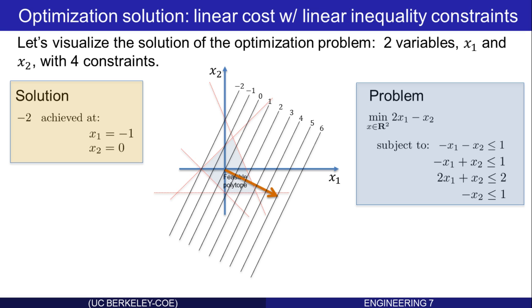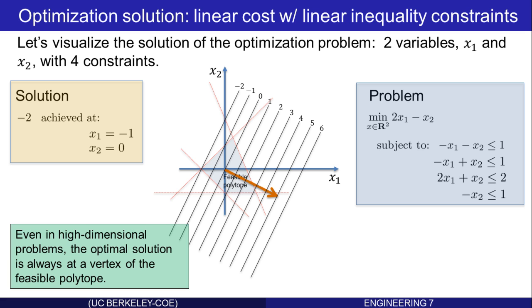It's clear from this visualization that in all these problems, an optimal solution will occur at one of the vertices of the feasible polytope. Well, that's true even in high-dimensional problems. An optimal solution is always at a vertex of the feasible polytope.